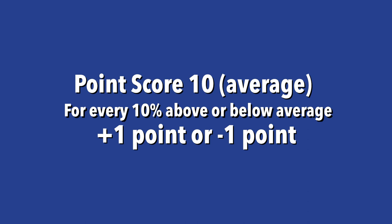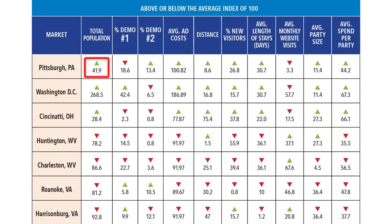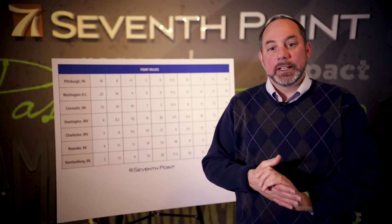Now that you've created your indexes, the next part is to take those indexes and create a point score. You start with a point score of 10 for being average. For every 10 percentage points above or below average, you will either gain a point or lose a point. For example, Pittsburgh is 41.9% larger than the average population of the market set, so they'll get four extra points in this data field, whereas Charleston is just 13% the size of the average score, so they're going to lose eight points.